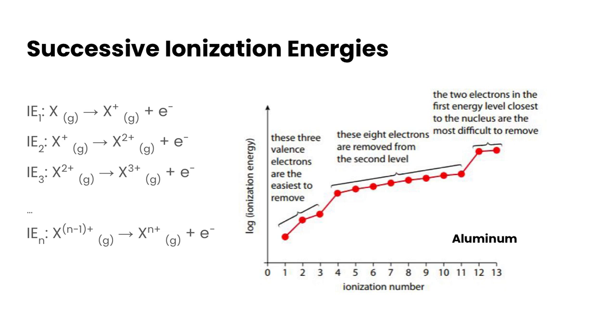First, we need to talk about what successive ionization energies are. Ionization energy is defined as removing an electron from a gaseous element to create a positively charged ion, thus releasing an electron.